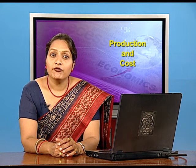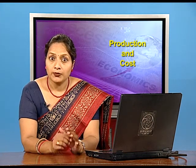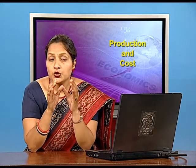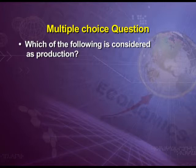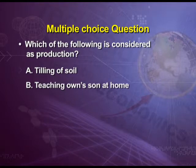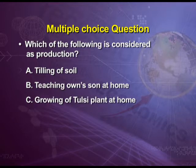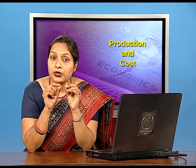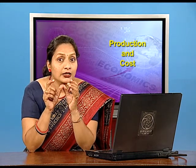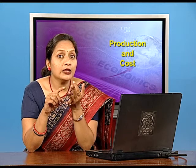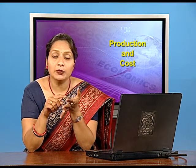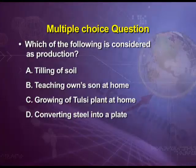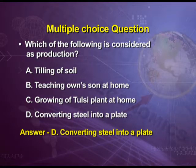Second question: which of the following is considered as production? Option A tilling of soil, option B teaching own son at home, option C growing a tulsi plant at home, option D converting steel into a plate. Remember, production is the creation or addition of utility — form utility, time utility, place utility, or personal utility. The answer is option D, converting steel into a plate, as it generates form utility.